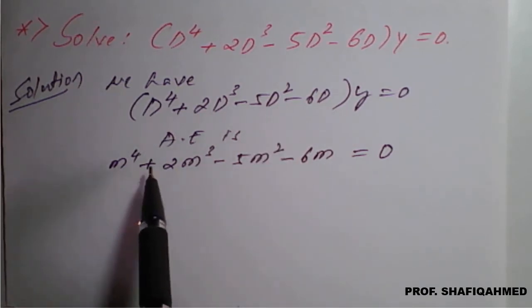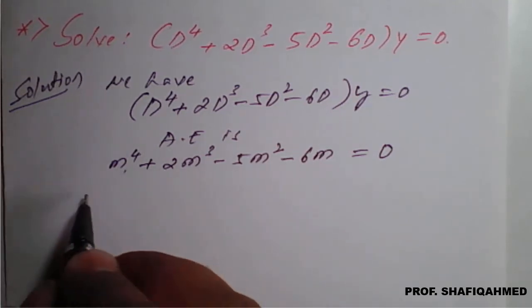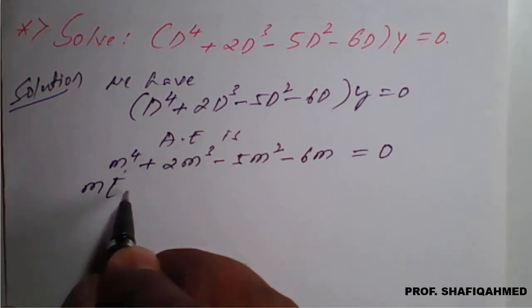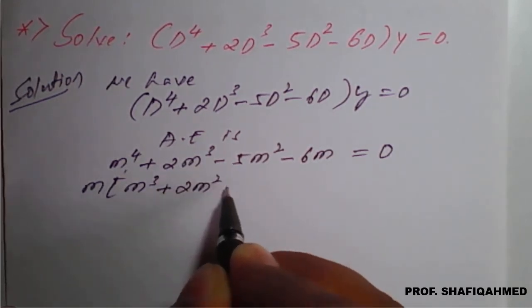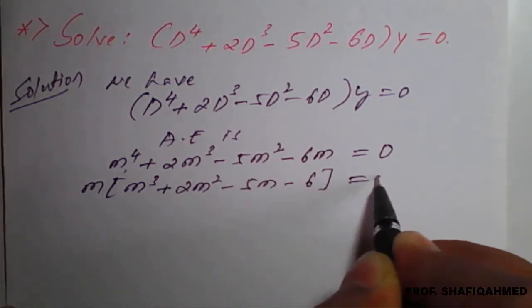So m⁴ + 2m³ - 5m² - 6m. You can see that we have four terms, all terms having m. So I will take one m common among this.